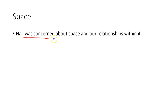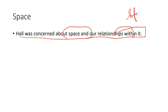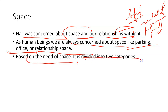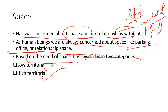Now let's talk about the third factor: space. Hall was also concerned about space and our relationship within it. We regularly talk about needing space in relationships and privacy. Hall says the understanding of space also varies with culture — in some places people need more space, in some places less. As human beings we are always concerned about space: parking space, office space, house space, and relationship space. Based on the need for space, it is divided into two categories: low territorial, which needs less space, and high territorial, which needs more space.